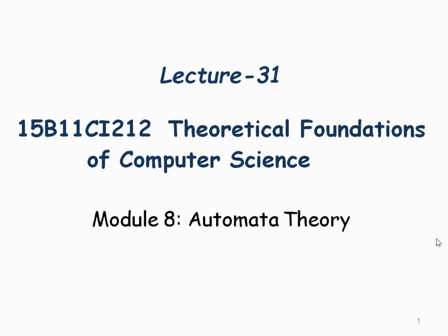We are going to see the machine structure in mathematical form. The machine will take some inputs. To talk with a computer, we require a language — just as two persons wanting to communicate require a common understandable language. We will see different mathematical machines or automated machines and what languages are accepted by those machines. The Turing machine is a top-level machine which will accept any kind of language and convert it into machine-understandable form.